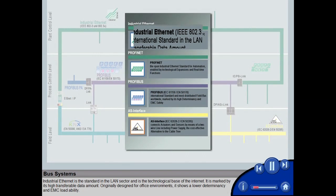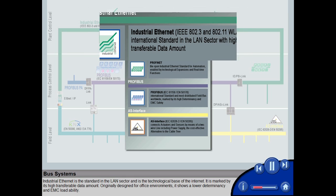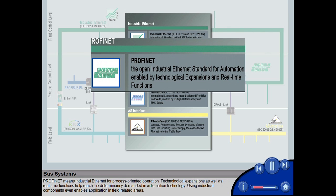Industrial Ethernet is the standard in the LAN sector and is the technological base of the Internet. It is marked by its high transferable data amount. Originally designed for office environments, it shows a lower determinancy and EMC loadability. PROFINET means industrial Ethernet for process-oriented operation.